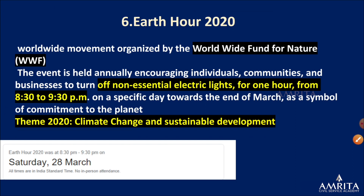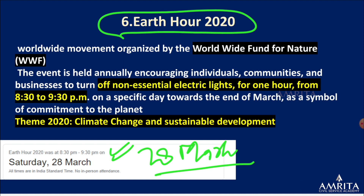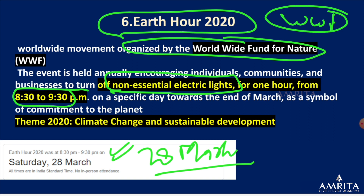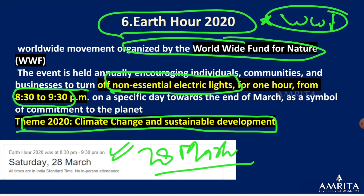Earth Hour 2020 is celebrated on 28th March — from 8:30 to 9:30 you switch off non-essential electric lights. It is organized by WWF. The theme of 2020 is climate change and sustainable development. The idea is a symbolic gesture for commitment to the planet.